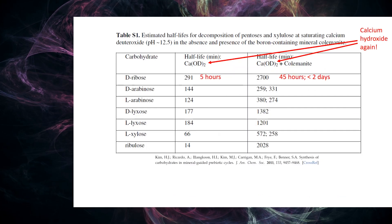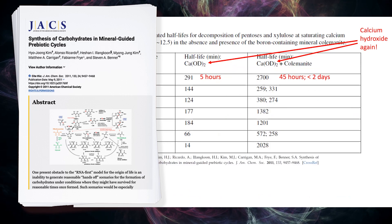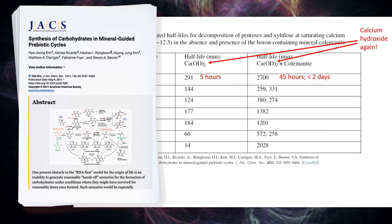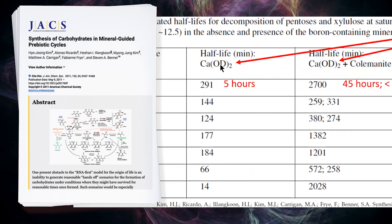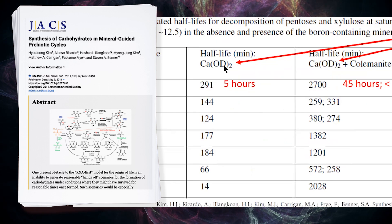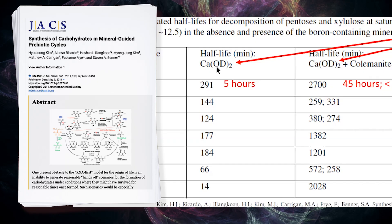Now we go into the details. If you look in his paper, go to table S1 — that means it's buried in the supplementary — but what's the base he's using? Look at that: calcium hydroxide again. Calcium deuteroxide is the same as calcium hydroxide, just a different isotope so you can look at it by NMR. But this is calcium hydroxide, the very base that Dave, you said was irrelevant.